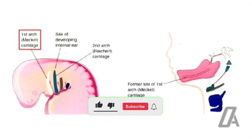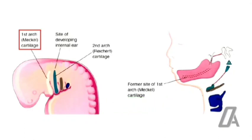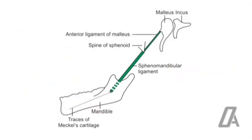The cartilage of the first arch is called Meckel's cartilage, developing at about the 41st to 45th day in utero. Meckel's cartilage provides a template for the development of the mandible. The derivatives of Meckel's cartilage include the ear ossicles — malleus and incus — the spine of sphenoid, the anterior ligament of malleus, and the sphenomandibular ligament.